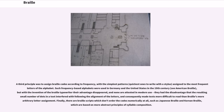A third principle was to assign Braille codes according to frequency, with the simplest patterns — quickest ones to write with a stylus — assigned to the most frequent letters of the alphabet. Such frequency-based alphabets were used in Germany and the United States in the 19th century, but with the invention of the Braille typewriter their advantage disappeared, and none are attested in modern use. They had the disadvantage that the resulting small number of dots in a text interfered with following the alignment of the letters, and consequently made texts more difficult to read.